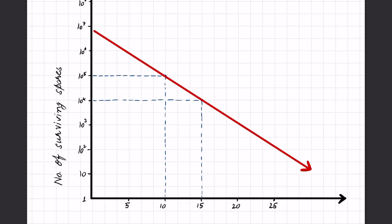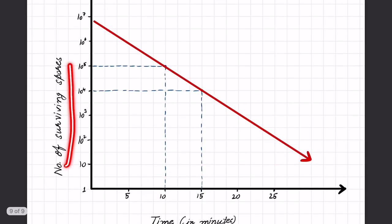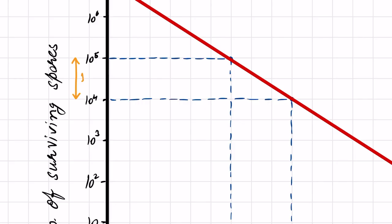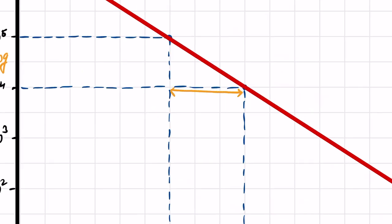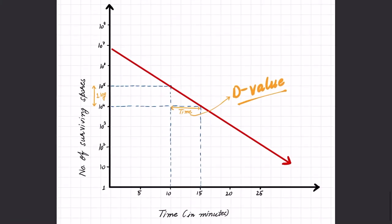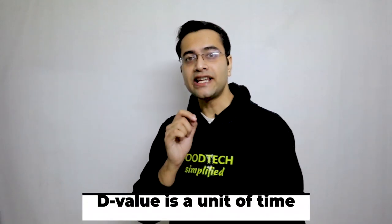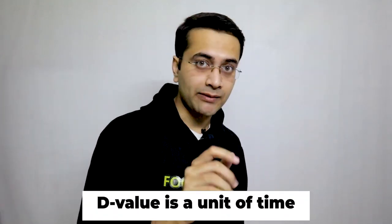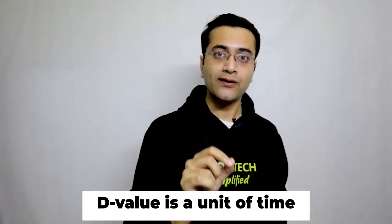The time in which microbial population is reduced by one log is known as D-value. D-value is also defined as the time required for 90% reduction of a given population. In other words, the time required to reduce the number of microbes by one log is known as D-value. Basically, D-value is a unit of time — remember that.